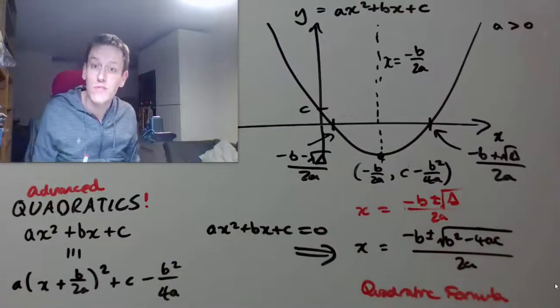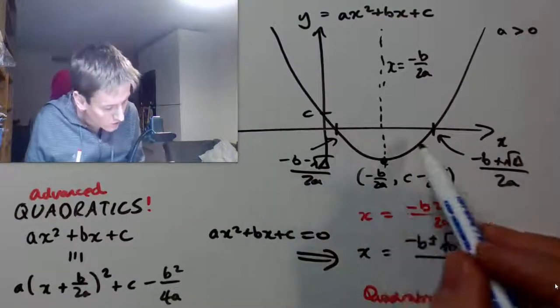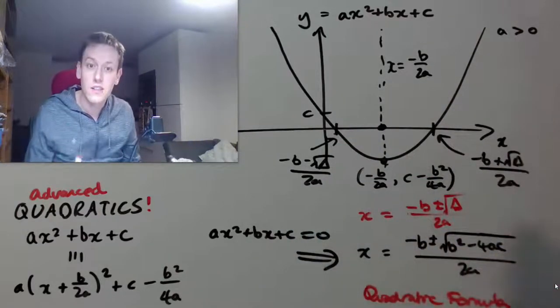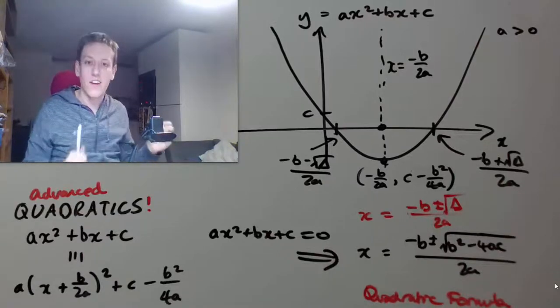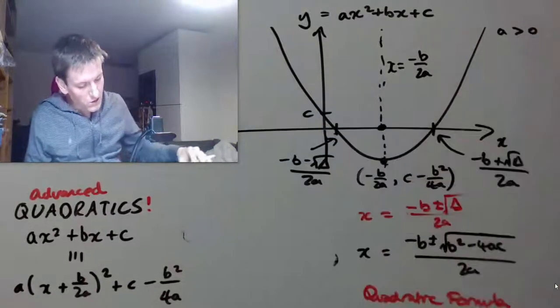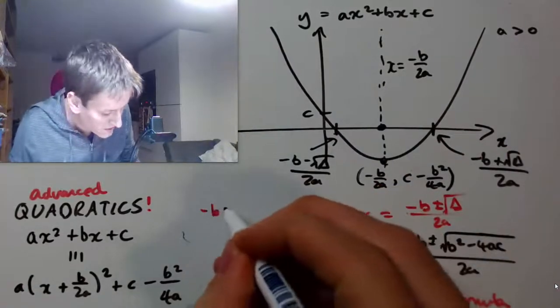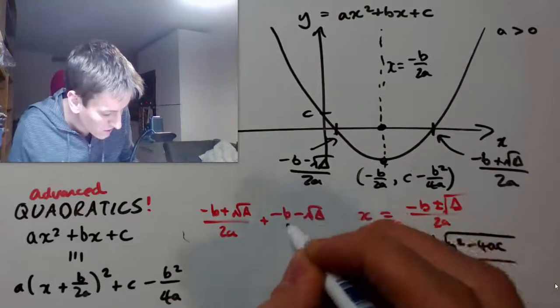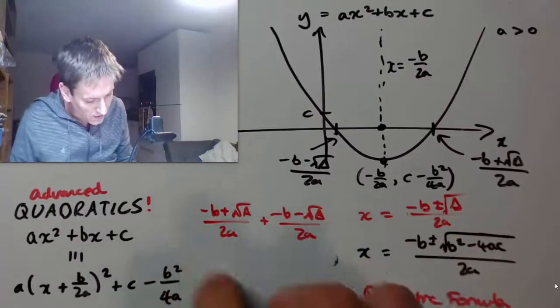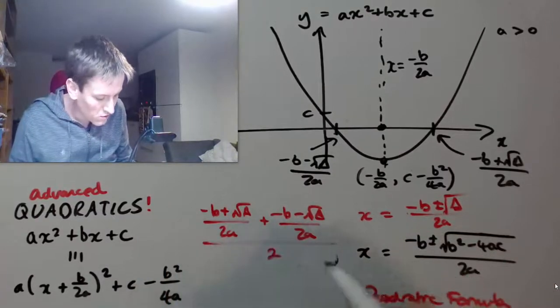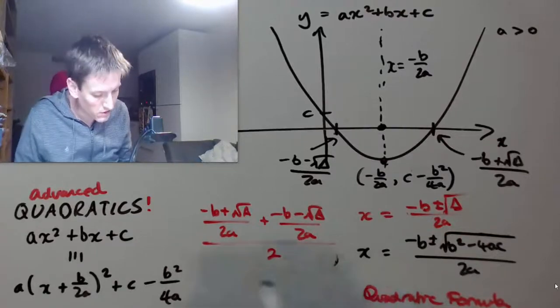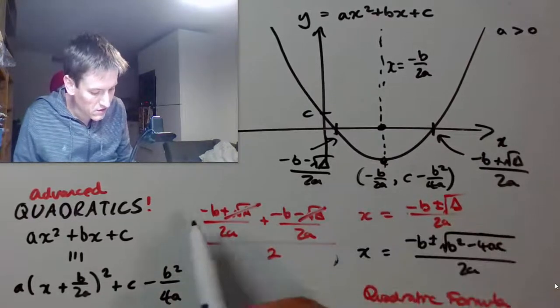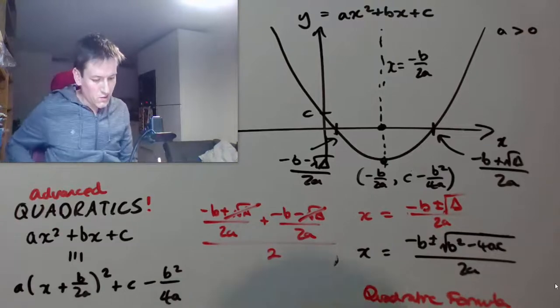And in fact if you think about the two roots of the quadratic equation here, you can see that this point here is exactly halfway between these two. Right. If I add together those two roots, minus b plus the square root of delta over 2a and minus b minus the square root of delta over 2a, then divide them by 2, so I'm averaging the two values. Well I've got a plus root delta over 2a and minus root delta over 2a, so they cancel out. So I've got minus 2b over 2a all over 2.